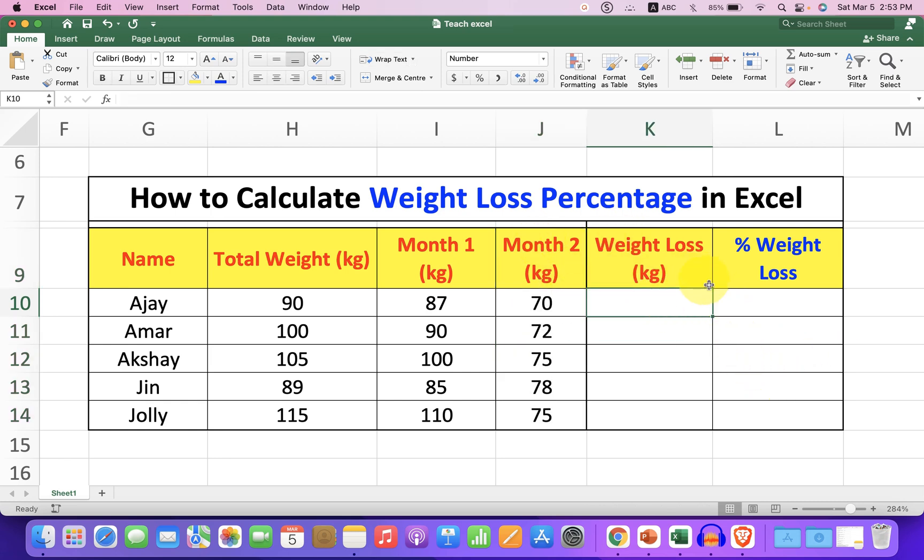So the formula to calculate weight loss is total weight minus final weight. In this case, total weight is 90 minus final weight which is 70 after the second month, and press enter.